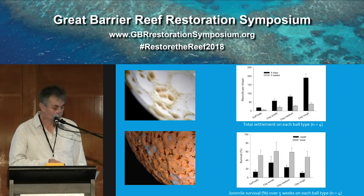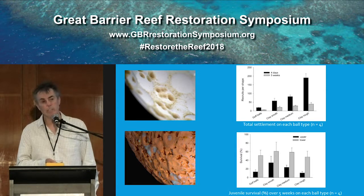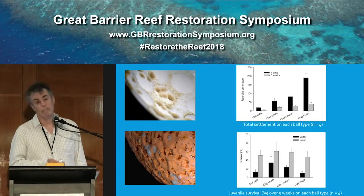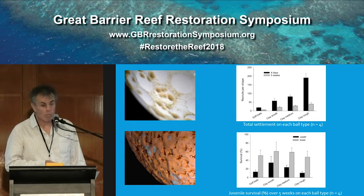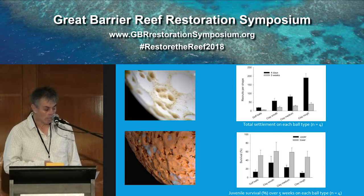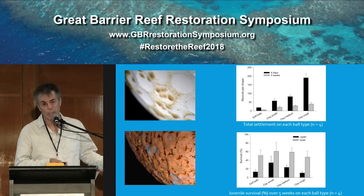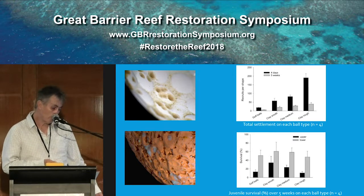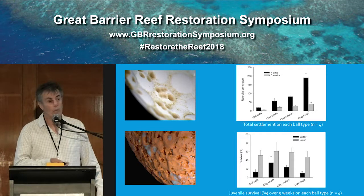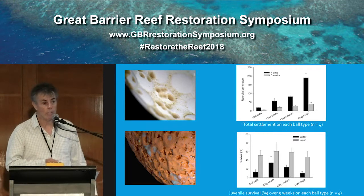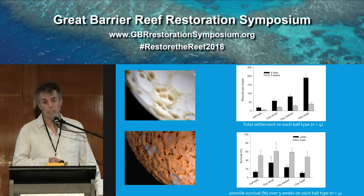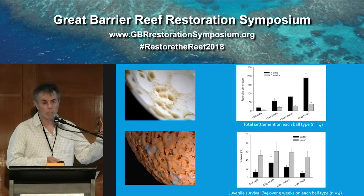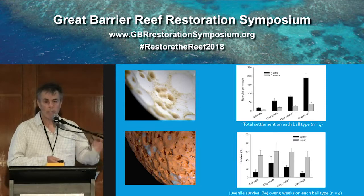The data showed two interesting things. Firstly, there's an increasing effectiveness of recruits with increasing fine-scale rugosity — it's blatantly obvious, no need to run stats on that one. The other thing is that we confirmed in this repeat trial that regardless of the nature of the substrate — polyurethane or ceramic, or the rugosity level — survival over five weeks favoured the ones in the bottom half of the spheres. Spheres are interesting because they provide all potential aspects for larvae to choose.